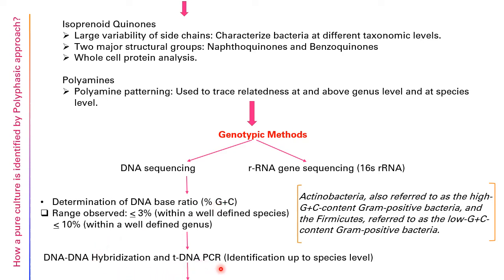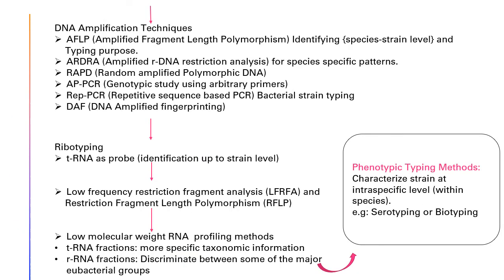DNA-DNA hybridization and tDNA PCR are techniques used for identification down to the species level. Actinobacteria are referred to as high GC content Gram-positive bacteria, while Firmicutes are referred to as low GC content Gram-positive bacteria. This is why DNA base ratio is important in genotypic methods. After DNA-DNA hybridization and tDNA PCR, you move to DNA amplification techniques.